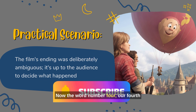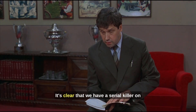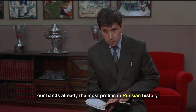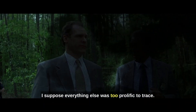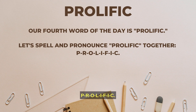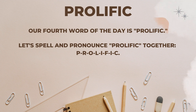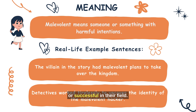Now, word number four. Our fourth word of the day is prolific. 'It's clear that we have a serial killer on our hands — already the most prolific in Russian history.' Let's spell and pronounce prolific together: P-R-O-L-I-F-I-C. Prolific. In daily language, prolific means someone who is exceptionally productive or successful in their field.